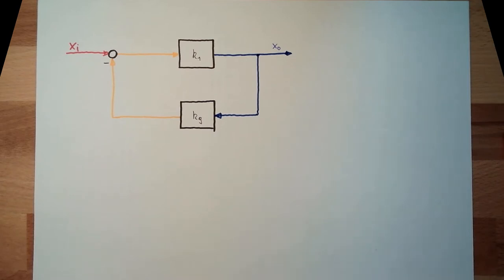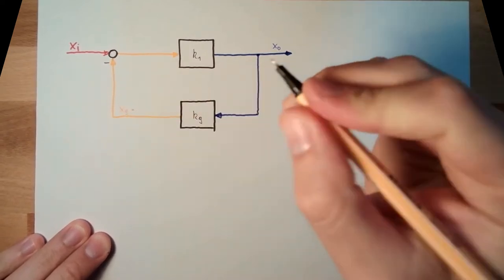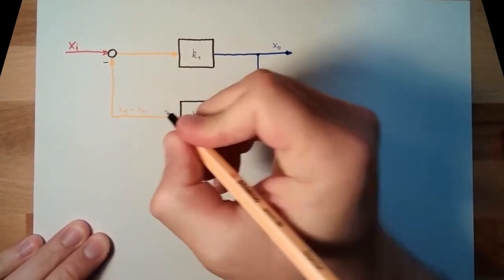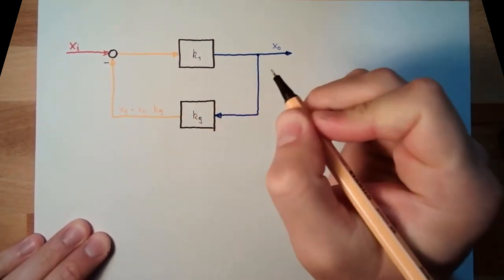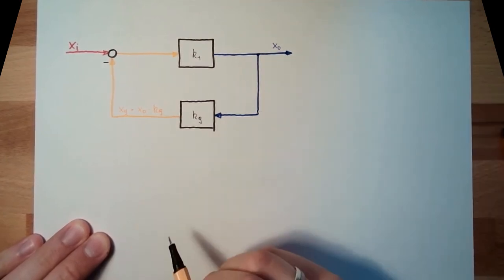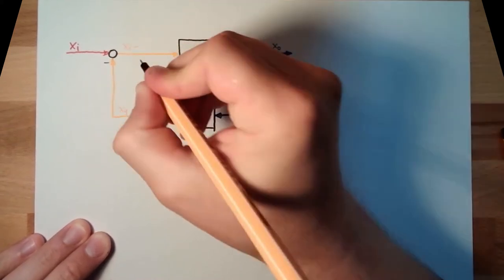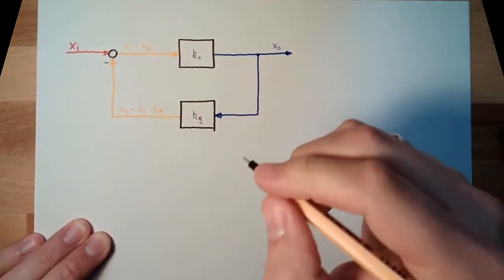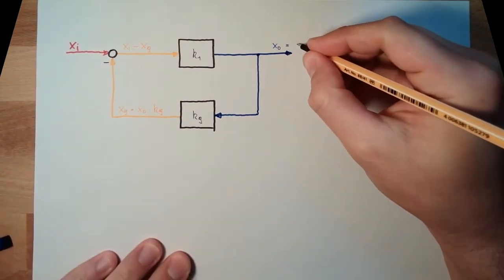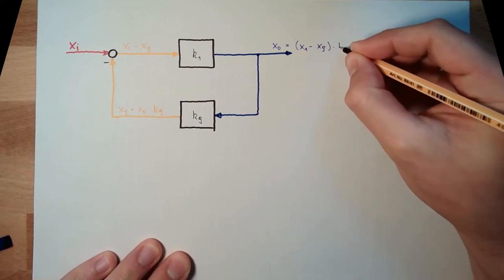So, this is the feedback signal XG, and this is XO, XO multiplied by KG. This signal here is XI minus XG, and this XO here is XI minus XG multiplied by K1.